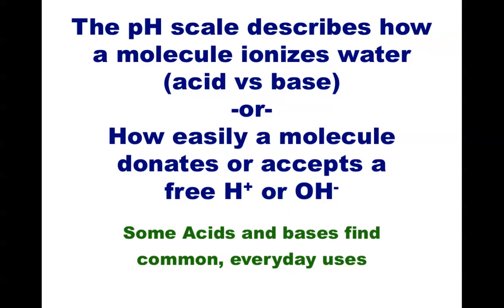This ionization event that occurs in water can be measured using the pH scale. The pH scale simply tells you what ratio of free hydrogen ions are found in a certain water or solution.